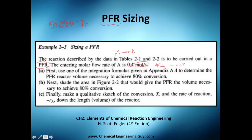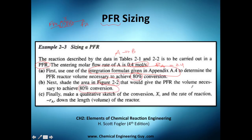The first thing they ask is to use the integration formula from the appendix. I find that method a bit boring — I always use the trapezoidal rule, which never fails. You can choose whatever interval you want. They ask you to calculate the 80% conversion volume, then go to a figure and graph the area under the curve to obtain the PFR volume for that conversion.